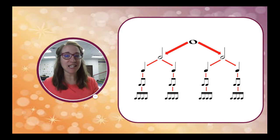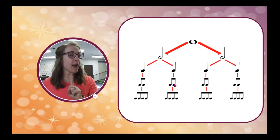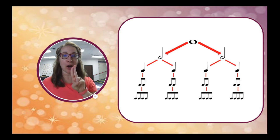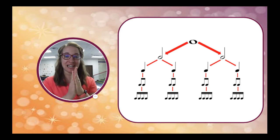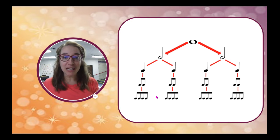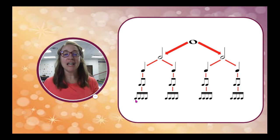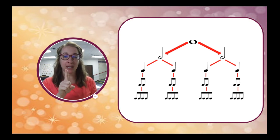Quarter notes can each be split into two eighth notes. One eighth note by itself gets half of a beat, so two eighth notes together make up one beat. Eighth notes can be split down even further into sixteenth notes, which we've talked about last lesson. Sixteenth notes are four sounds happening in one beat.